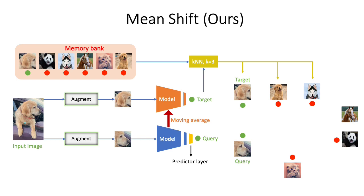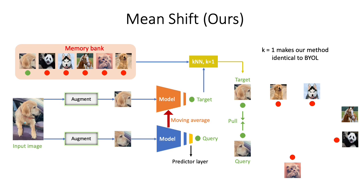Next, we find k nearest neighbors of the target from the memory bank. Let's consider k to be 3. Note that the target embedding is already present in the memory bank, so the first nearest neighbor will always be the target itself. Finally, the loss simply minimizes the sum of the cosine distances between the query and the nearest neighbors — intuitively pulling the query closer to the target and also closer to the k nearest neighbors. Note that when k equals 1, the only nearest neighbor is the target embedding, which means our method becomes identical to BYOL, where no grouping between different images is performed.